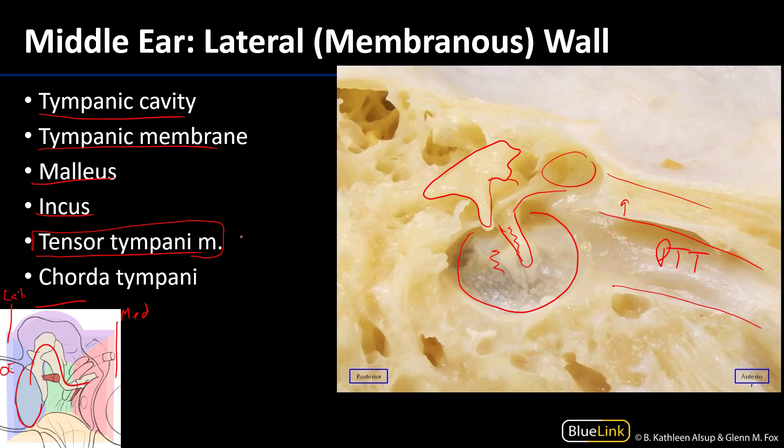Tensor tympani is innervated by branches of V3. I remember that V3 innervates tensor tympani because people carry a lot of tension in their jaw, in their mandible — the area innervated both afferently and efferently, including the muscles of mastication. So anything with 'tensor' in the name, like tensor tympani, is a V3 target.